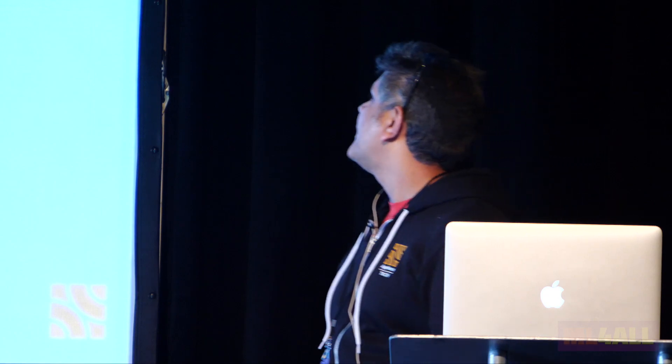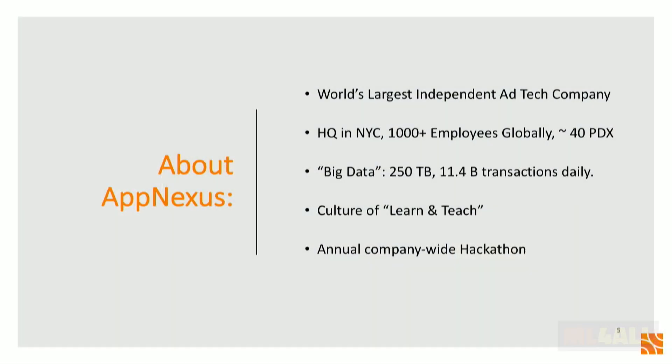A little about AppNexus. We are the world's largest independent ad tech company — Google and Facebook are much bigger, but they have their own publishing services, whereas we are independent. We have headquarters in New York, around 1,000 employees. We are really a big data company in every sense of the word. We process 250 terabytes of data on a daily basis, and there are over 11 billion transactions for ad impressions that we process. The company also has a culture of learn and teach — one of our core values — and we do an annual company-wide hackathon.